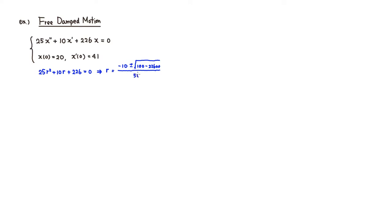So you can see that negative 10 divided by 50 is going to be negative one-fifth. And under the square root: 100 minus 22,600 would be negative 22,500.